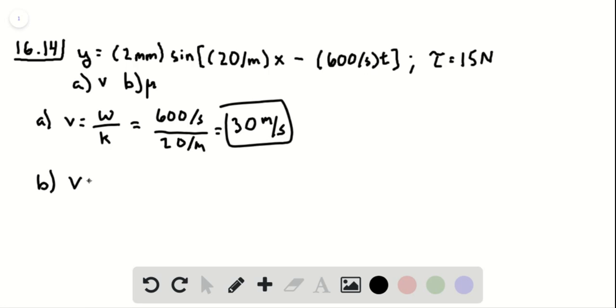Part b: The wave speed for a string equals the square root of tension divided by linear density. This means the linear density equals the tension divided by the speed squared. We know everything here, so we find this is 17 grams per meter.